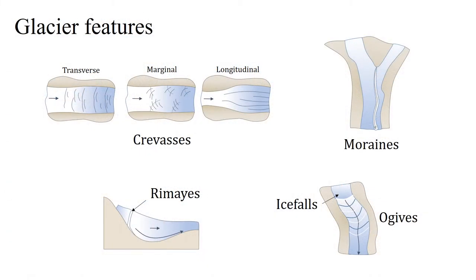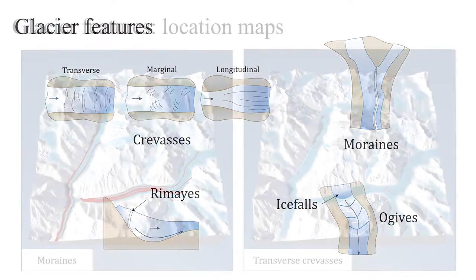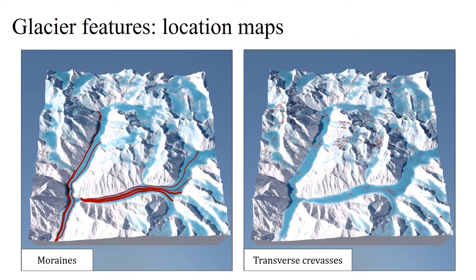Once we have the simulated ice layer, we procedurally place its most distinct features such as transverse, marginal, and longitudinal crevasses, moraines, rimmets, ice falls, and ogives. For each feature, we compute a placement map, which is used to create the highly detailed mesh and textures for rendering.